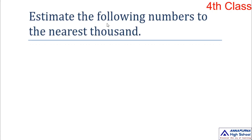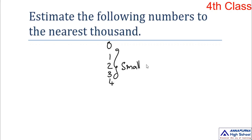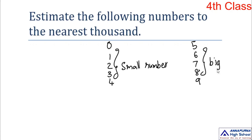This is the same method we learned before; we are applying those same steps here, so it is very easy. We are estimating to the nearest thousand. There is one shortcut: we select numbers 0, 1, 2, 3, 4 — these five digits belong to the small number family. The next five numbers — 5, 6, 7, 8, 9 — belong to the big number family.